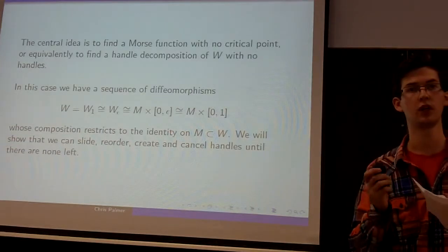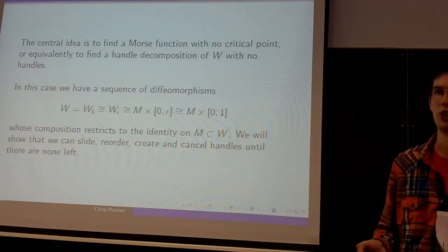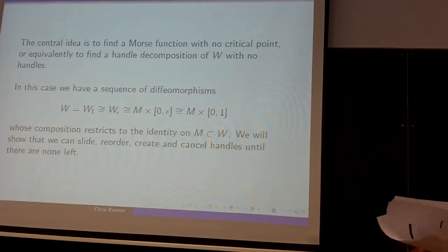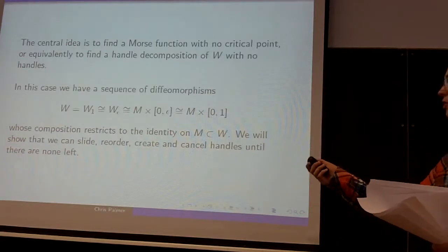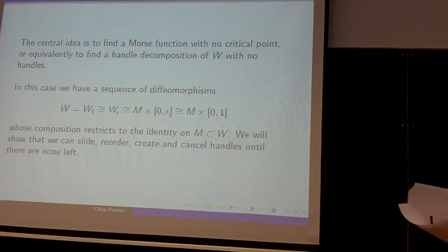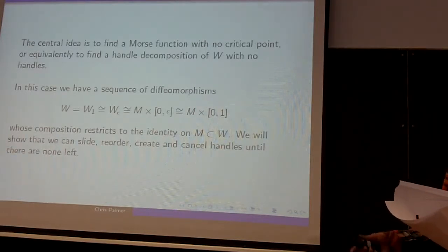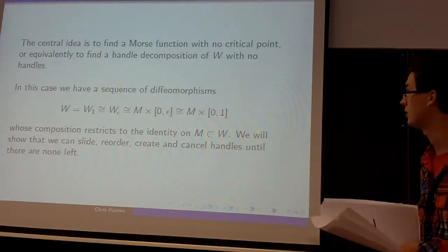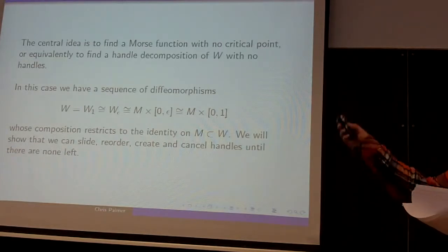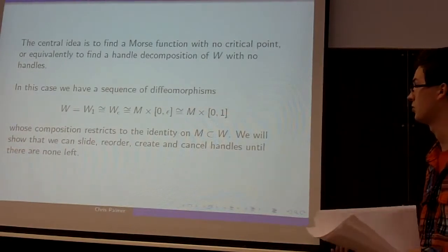So the idea now is let's try to find a Morse function which has no critical points or equivalently a handle decomposition that has no handles, because this gives us a series of diffeomorphisms. W_1 was just a pre-image of [0, 1] under F, that's W, but then there are no critical values between ε and 1, so there are no critical points between the pre-images, so we can diffeomorphically bash it down. We know that this is a collar neighborhood, and then this collar neighborhood is just diffeomorphic to M × [0, 1], and this diffeomorphism also restricts to the identity on M on the left hand side and M × 0 on the right hand side.